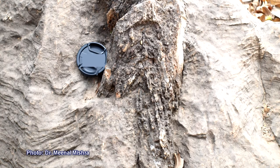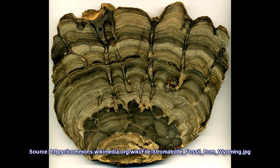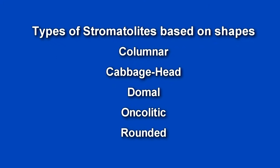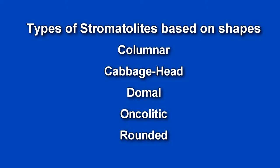The microbial laminate tends to grow in the form of columns. They overlay each other, with a general pattern of arching over each other, forming different types of shapes. Stromatolites can be classified as columnar stromatolite, cabbage-like stromatolite, domal stromatolite, oncolytic stromatolite, or rounded stromatolite — so they are of different shapes.